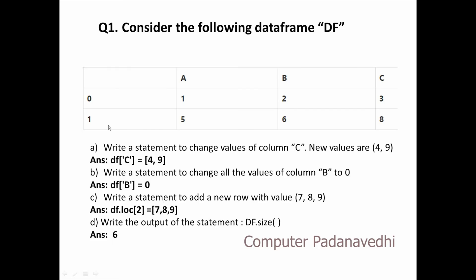Now the value of C is [4, 9]. If you add another row, you want to add a row here. Then the values become 7, 8, 9. Write a statement to get the output using df.size. df.size will give the number of elements in the DataFrame. Now we have 6 cells.